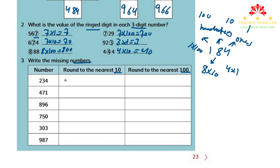Let me rewrite the numbers here. Number 234: we underline 3 and circle 4. Seeing that 4 is 4 or less, so this number rounds down to 230. The second number is 471: we underline 7 and circle 1. 1 is also 4 or less, so this number rounds down to 470.